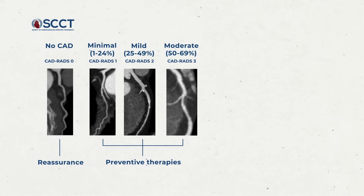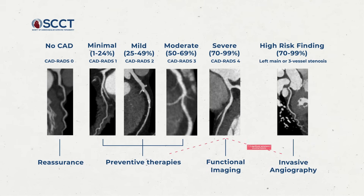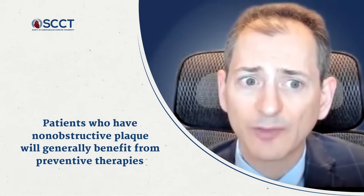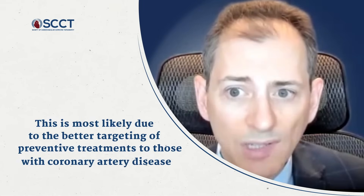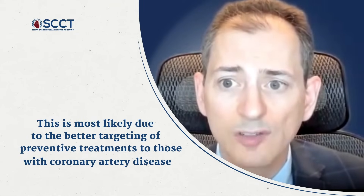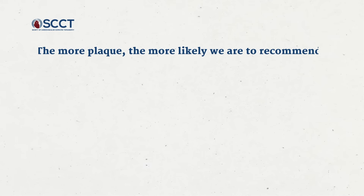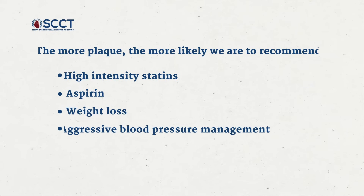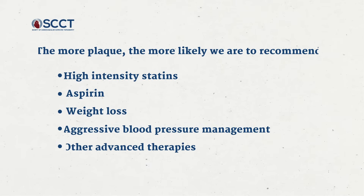This slide shows how we might use coronary CTA results in patient management. From left to right is an increasing severity of stenosis — from patients who have no coronary disease, minimal stenosis, mild, moderate, severe, and high-risk multi-vessel disease or left main disease. Patients who have non-obstructive plaque will generally benefit from preventive therapies, as better targeting of preventive treatments to those with coronary disease is key. Thus, the more plaque, the more likely we are to recommend high-intensity statins, aspirin, and perhaps other interventions like weight loss, aggressive blood pressure control, and other advanced therapies to treat diabetes and dyslipidemia.